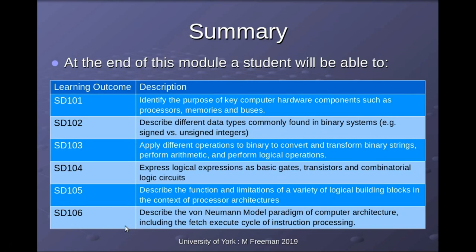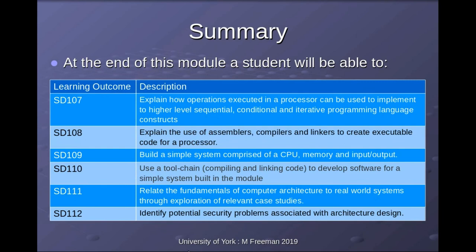Just to finish off, these are the learning outcomes for the module as described in the module descriptor. Through the journey of building our better bug trap, we'll cover all these outcomes: identifying the components that build up our computer systems — processor, memories, and buses; the data types we'll be processing; how system blocks are made from transistors and logic gates; implementing our stored program computer, the Simple CPU; identifying its limitations; describing how the bug trap's functionality can be implemented in software; how we generate that software using tool chains including assemblers, compilers, and linkers; and interfacing those to the real world. Fingers crossed everyone will find this an enjoyable module — if you have any questions, don't be shy, do come and see me.